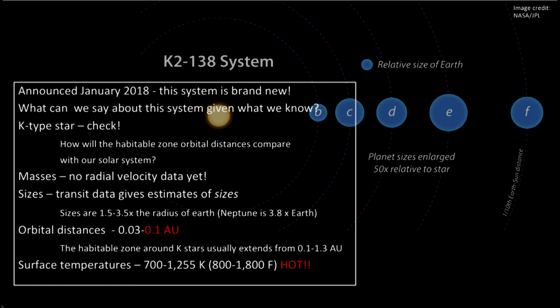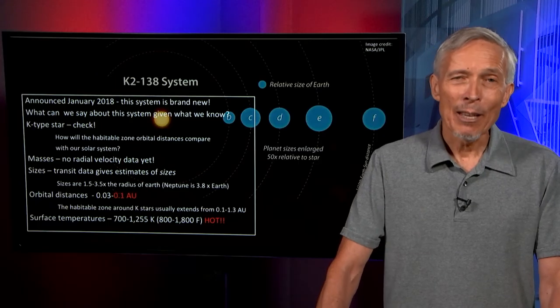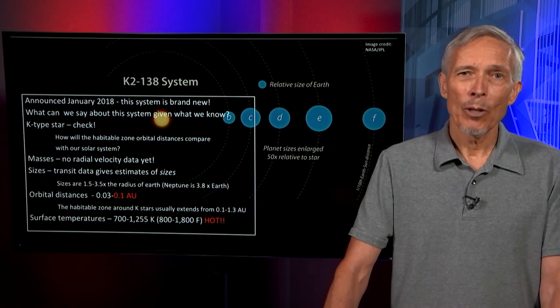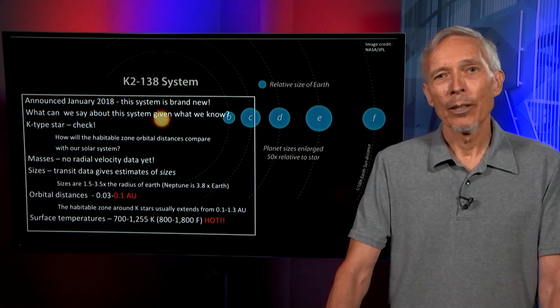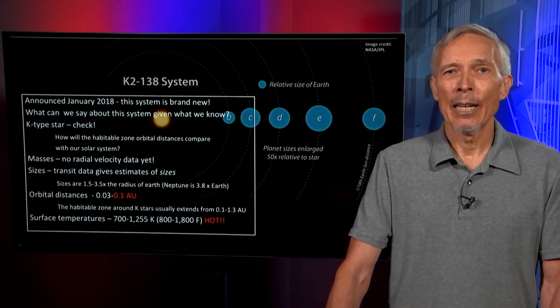The habitable zone around a K-star usually extends from 0.1 AU to 1.3 AU. So these surface temperatures on this system are extremely hot, 800 to 1,800 degrees Fahrenheit. So even though it is a feeble red dwarf star, in this situation the multiple planets appear to be uninhabitable.